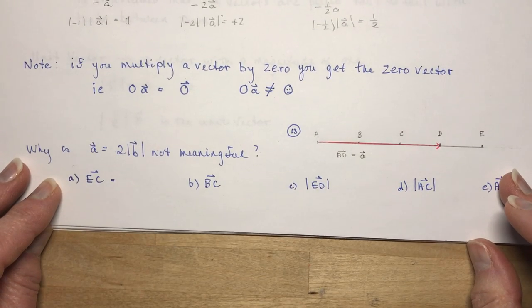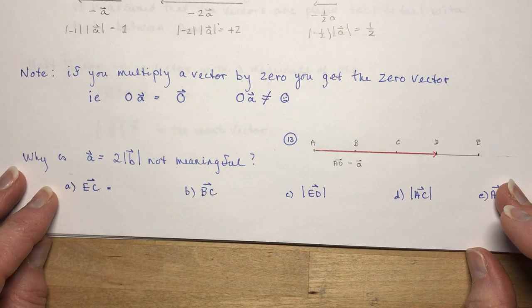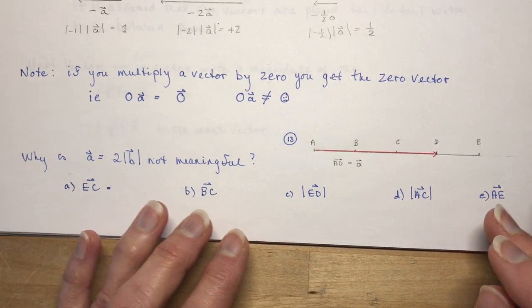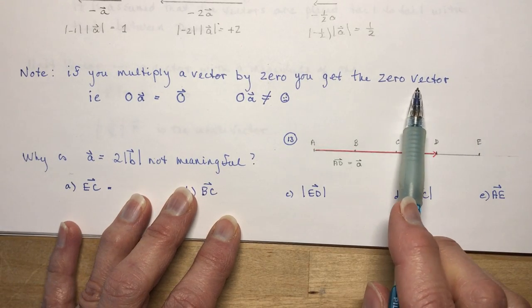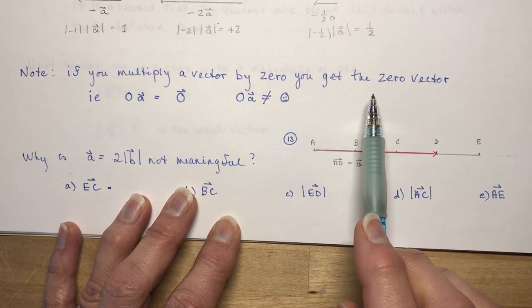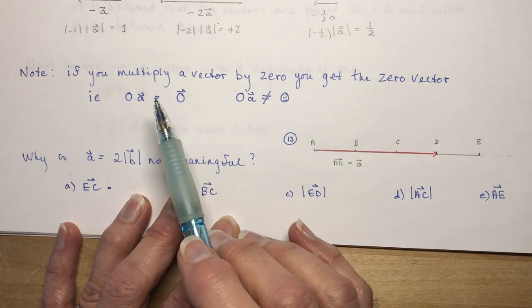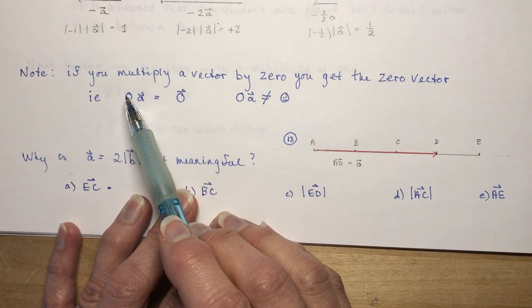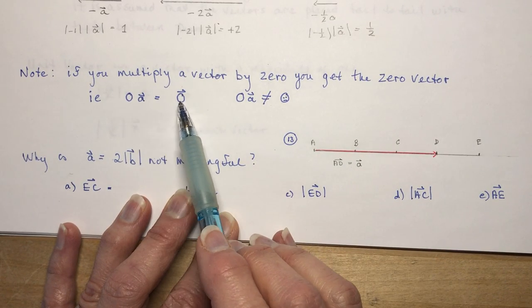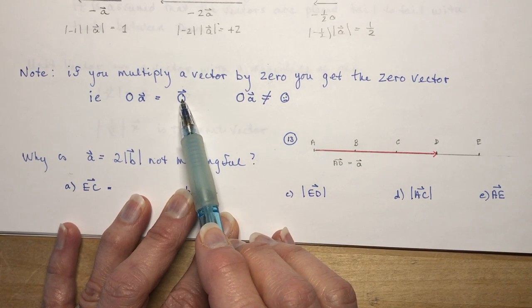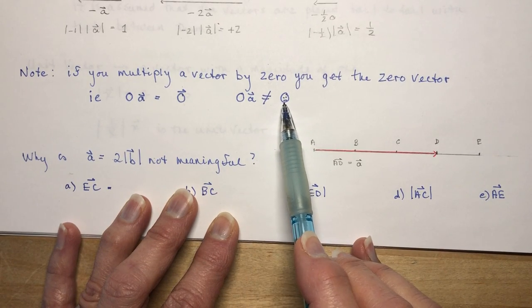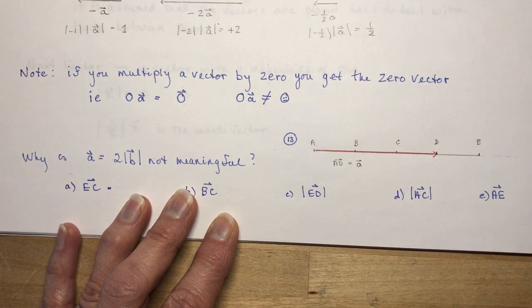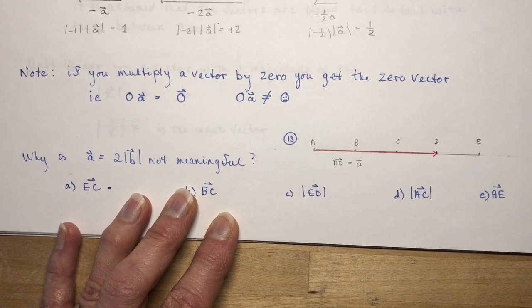Note: if you are multiplying a vector by zero, you get the zero vector — not zero. The zero vector is not equal to zero. Just remember that, because there is something called a zero vector.